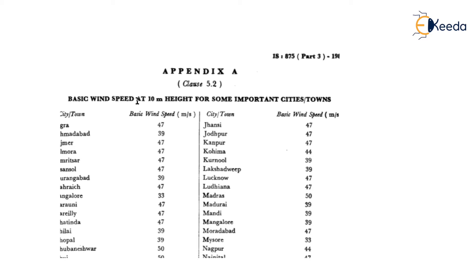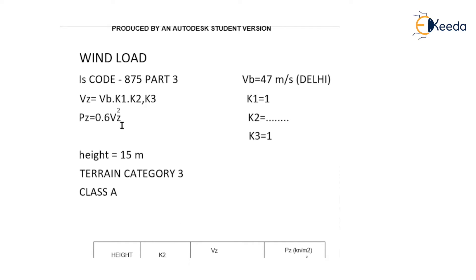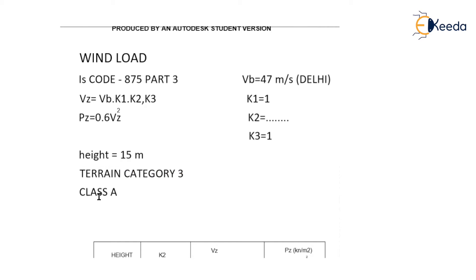For heights more than 10 meters you have to calculate wind pressure. We have a building of 15-meter height. Terrain category is 3 and class is A because height is 15 meters. For wind load we use IS 875 Part 3. VZ equals VB × K1 × K2 × K3, and design wind pressure PZ equals 0.6 × VZ².